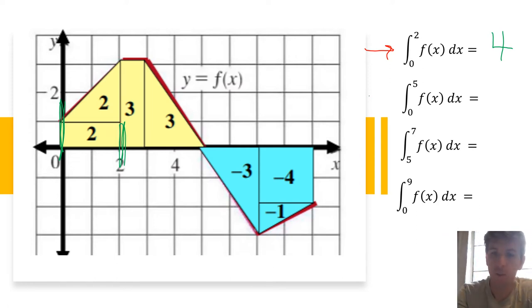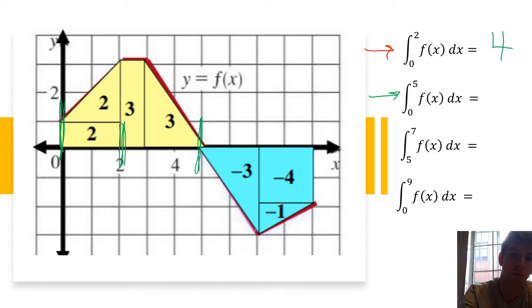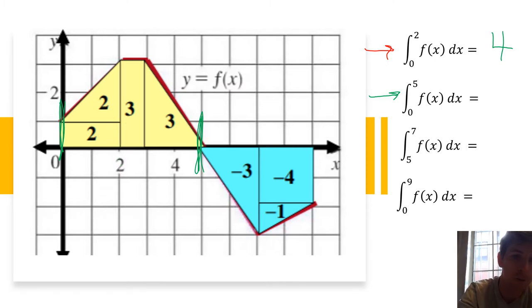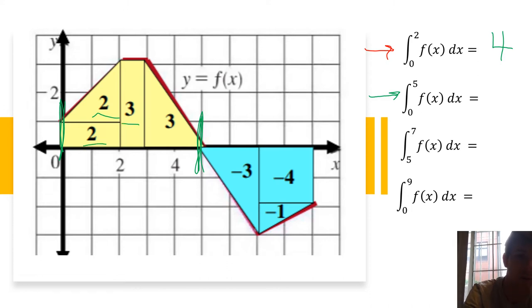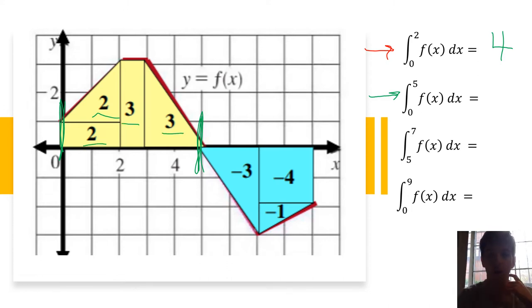Let's do the next one: 0 to 5. We're integrating our function all the way over there from 0 to 5. We have 2, 2, 3, 3 — we add all those areas up and we get 10.